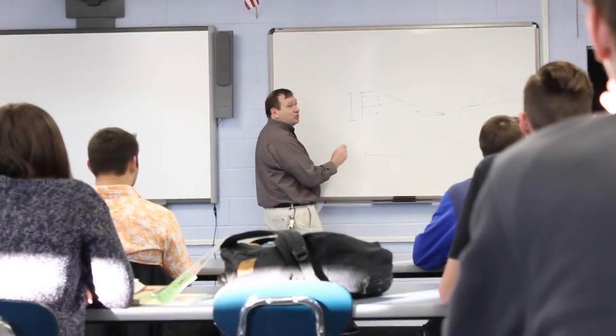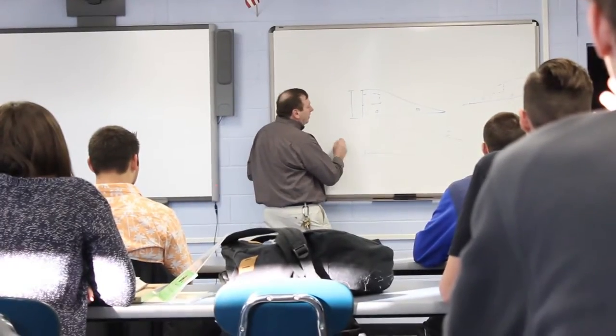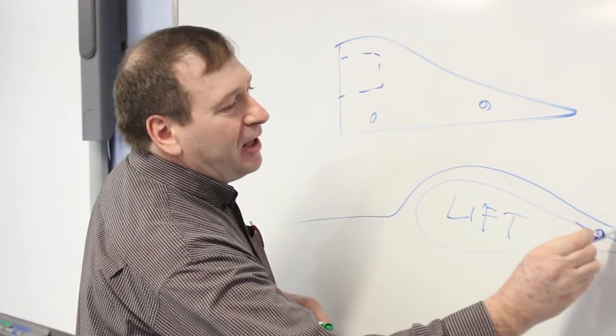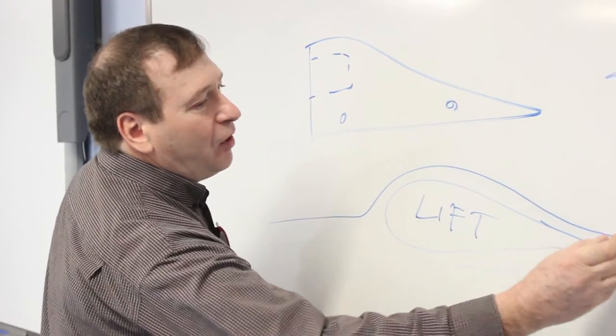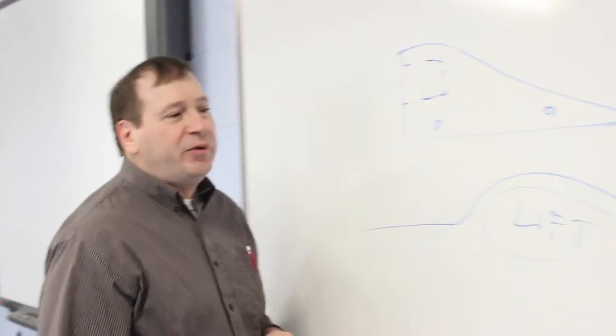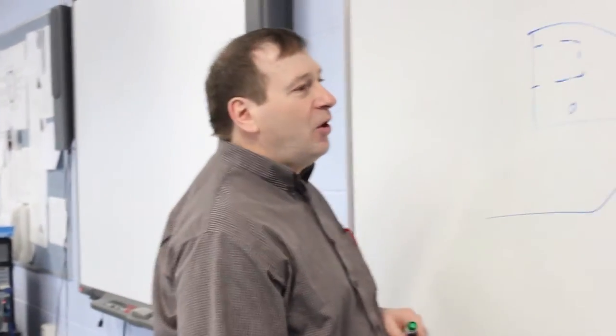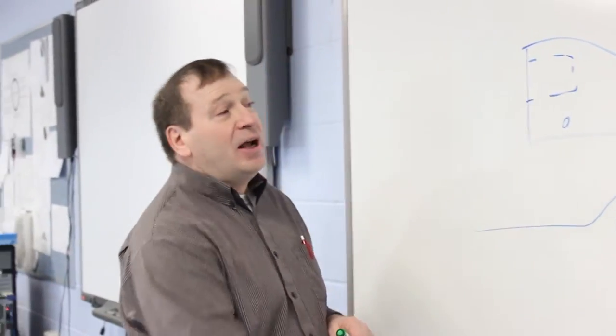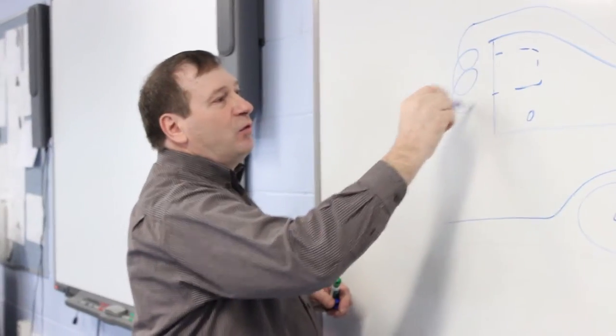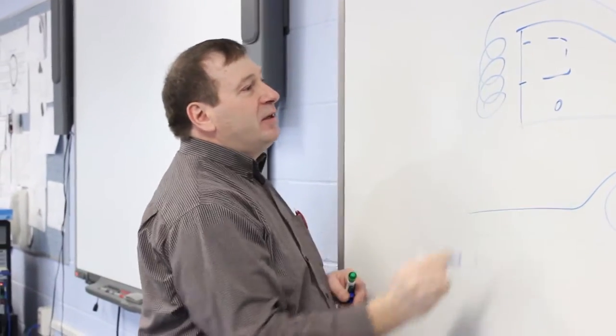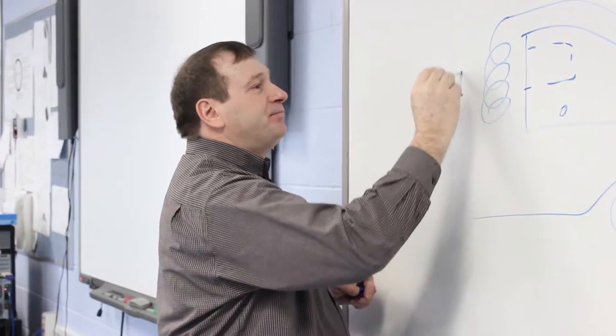What it does for us in aerodynamics, the air is allowed to not only flow over but redirect itself and continue to flow. Whereas the square back shape, air as it flows over begins to form turbulence, and this is going to create drag.